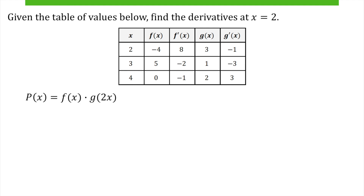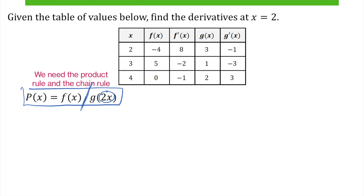A table problem could look like this. Given the table of values below, find the derivative at x equals 2. We have the function p of x equals f of x times g of 2x. So we've got two functions being multiplied together, and one of those functions is a composite function. That means we need the product rule and the chain rule.